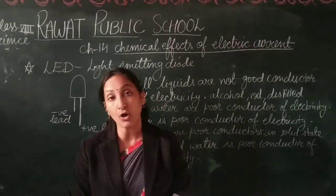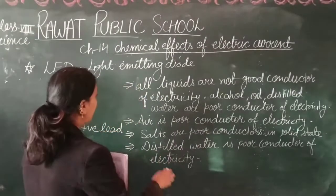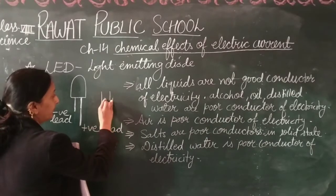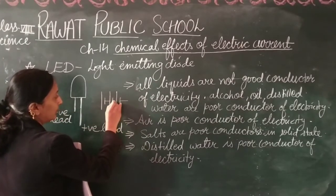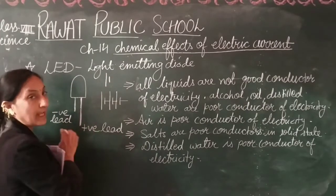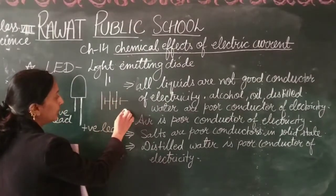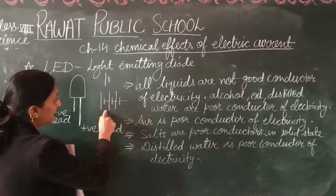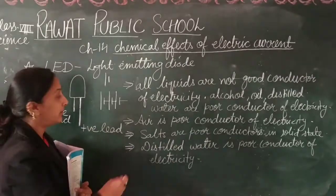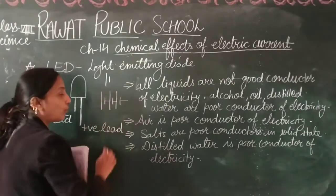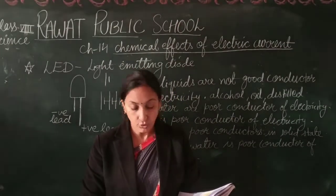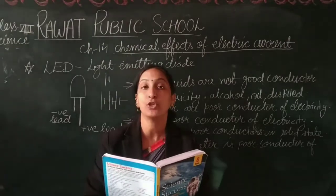A battery is a combination of cells. We represent a single cell with a bigger bar and a smaller bar. Two or more cells connected together form a battery. So a battery is simply a combination of cells, and when drawing a battery symbol, we draw a combination of cells.